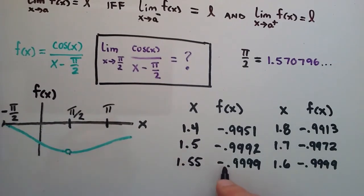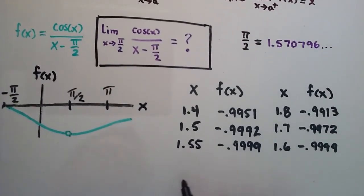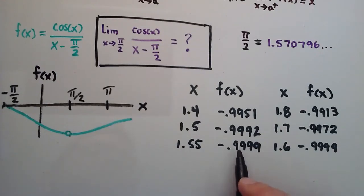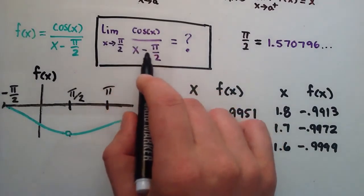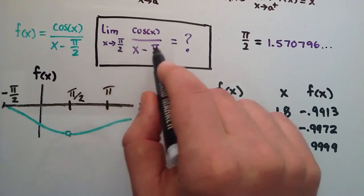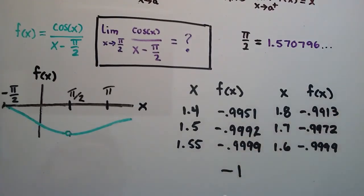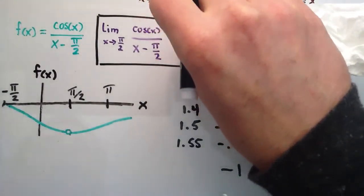So from both sides we're getting to this value of negative 0.9999, carried out to four decimal places. As we approach closer and closer from the left and the right, what we find is that the closer we get to f(pi/2), the closer we get to the value negative 1. All these values from both the left and the right are leading up to negative 1 as we approach pi over 2.